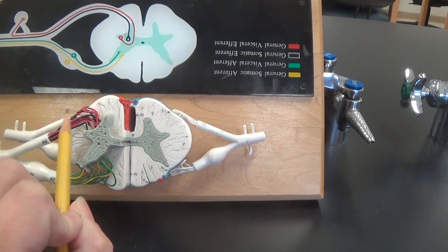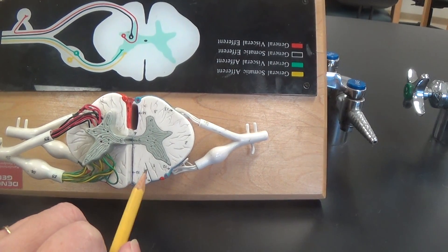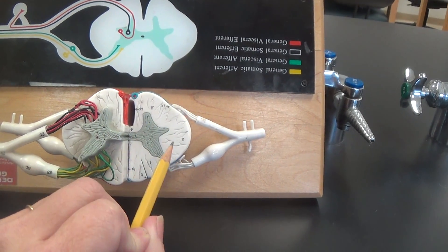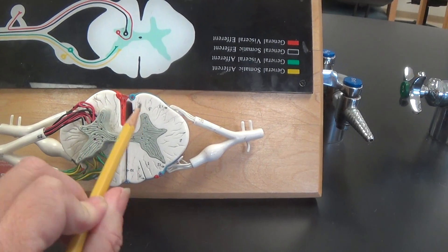Around the gray matter we have the white matter and these areas are called funiculi. This is the posterior funiculus, here is a lateral funiculus, and here is the anterior funiculus.